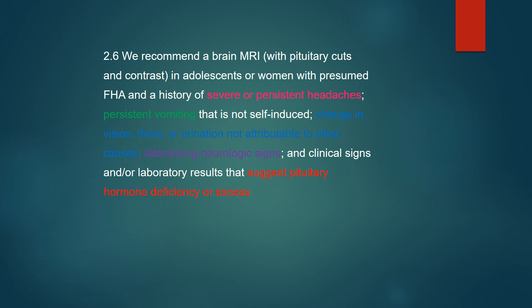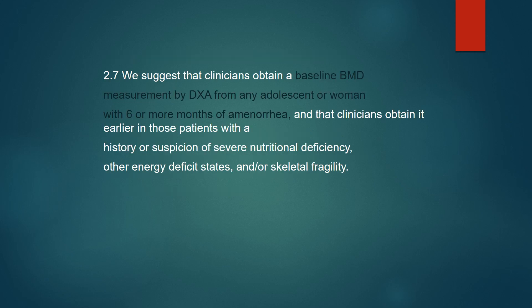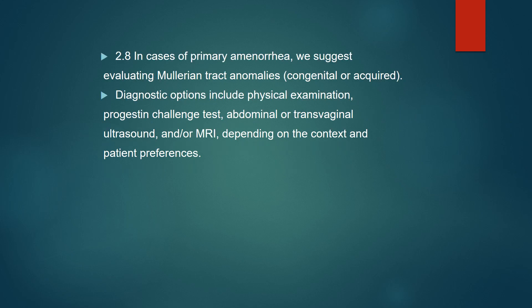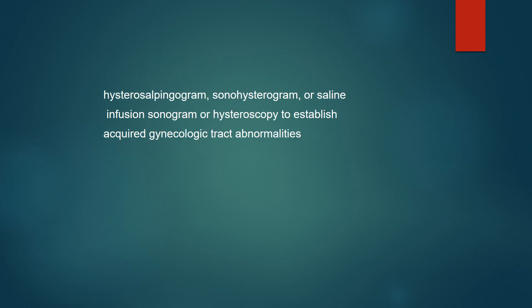Brain MRI is recommended in adolescents with presumed FHA and a history of severe persistent headache. Baseline BMD measurement by DXA is recommended in adolescent women with six or more months of amenorrhea, and clinicians should obtain this early in patients with a history or suspicion of severe nutritional deficiency. In cases of primary amenorrhea, evaluating Müllerian tract abnormalities is recommended. Diagnostic options include physical examination, progesterone challenge, abdominal or transvaginal ultrasound, MRI, hysterosalpingogram, sonohysterogram, saline infusion sonogram, and hysteroscopy to establish acquired gynecological tract abnormalities.